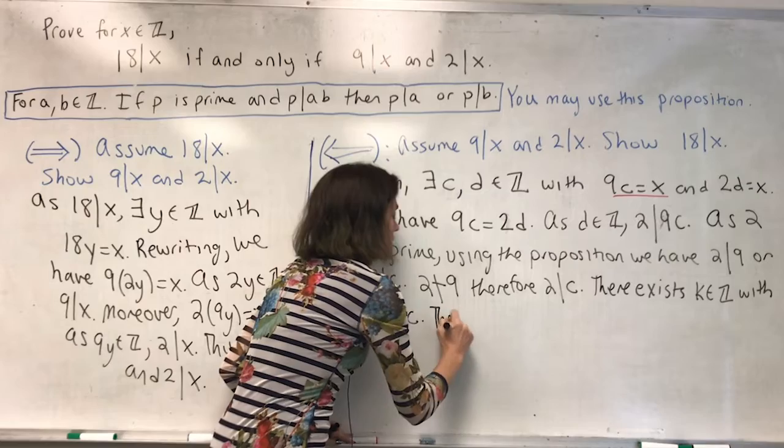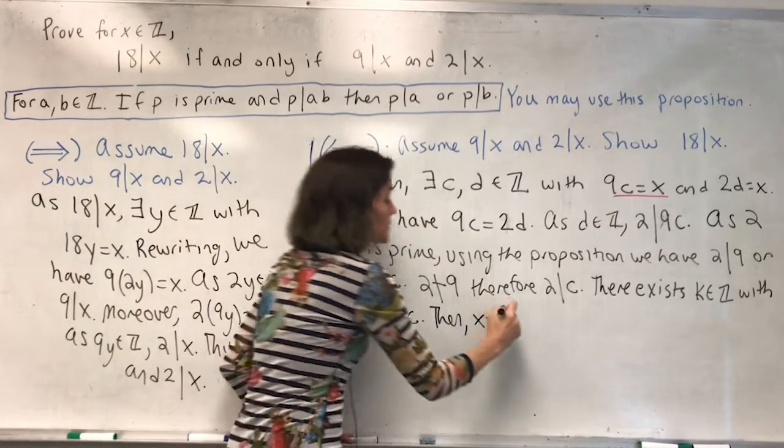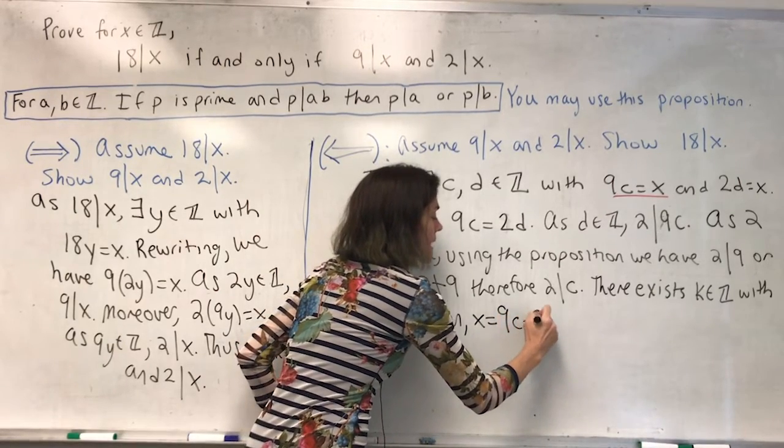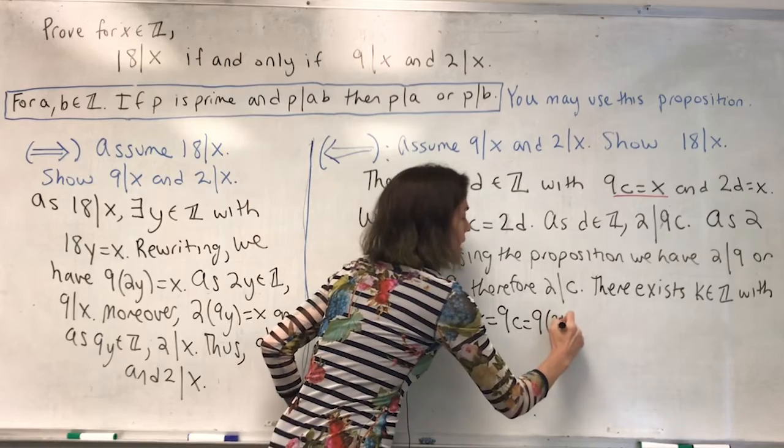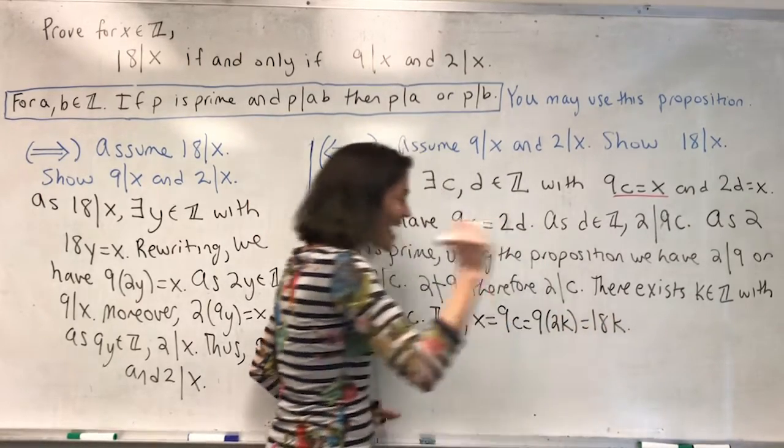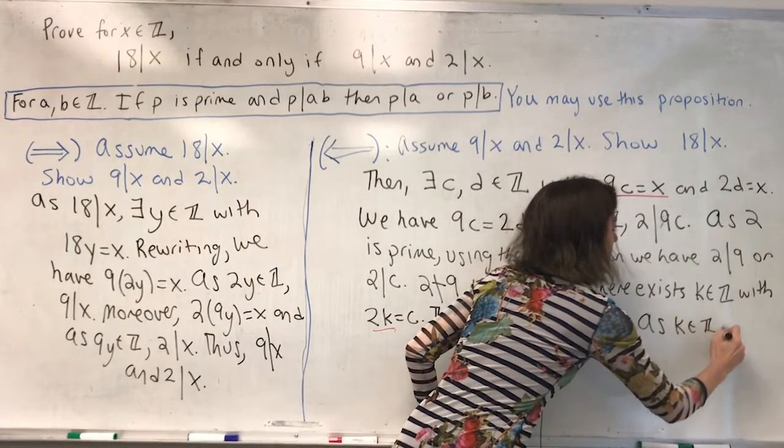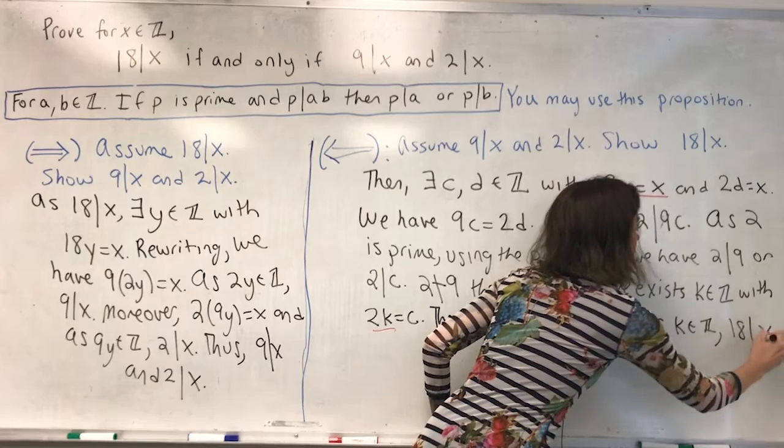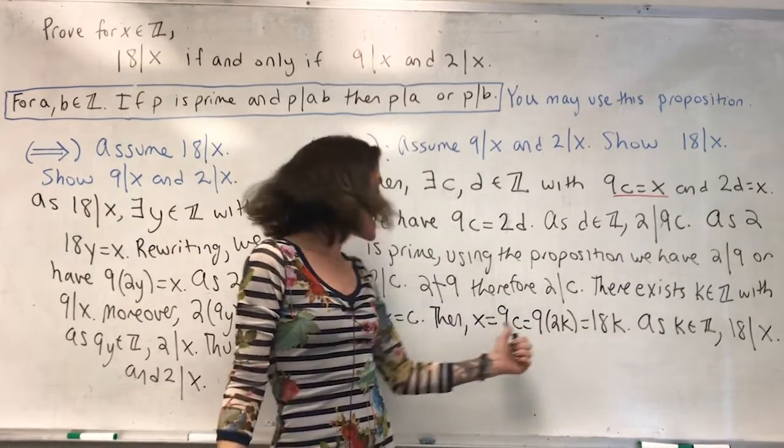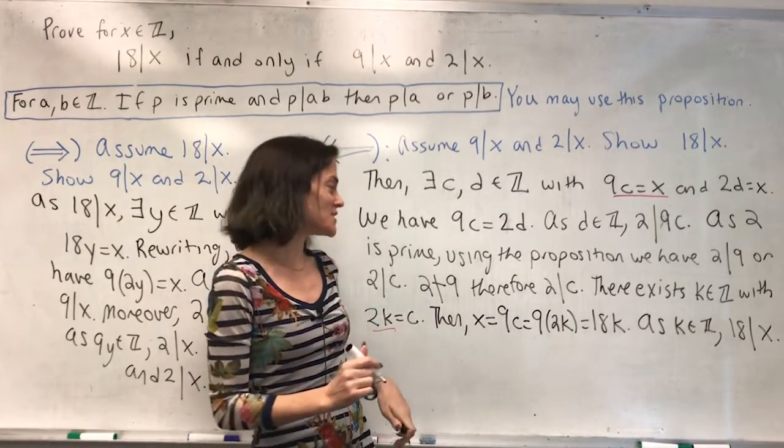Then x equals 9 times c, which is 9 times 2k, which is 18k. As k is an integer, 18 divides x. We have 18 times k is x, k is an integer, therefore 18 divides x. This is what we want to show.